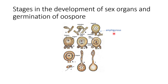Such a type of antheridium is known as amphigynous. There are two kinds: amphigynous — when the antheridium is present below the oogonium like a collar — and paragynous — when the antheridium is attached laterally to the oogonium.